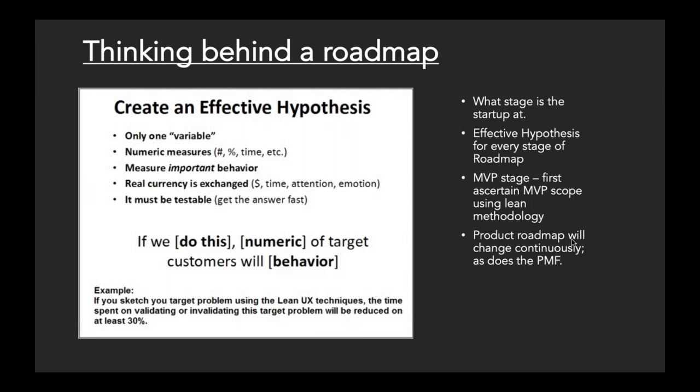What stage the startup is at is very important — whether you're in seed, series A, B, or C. Until series B or C we are all early-stage companies. At MVP stage or even otherwise, for a startup this roadmap has to start off with lean experimentation. A lot of us think we are lean but we are pretty heavy-weight, spending a lot of money building search and features which won't get used. It's very important to bring in the right checks and balances from the beginning.